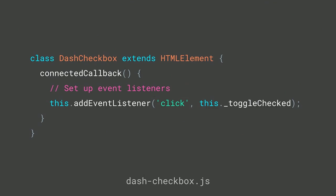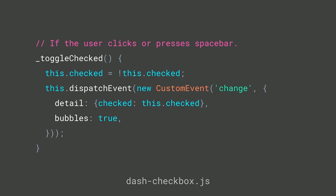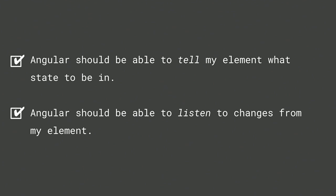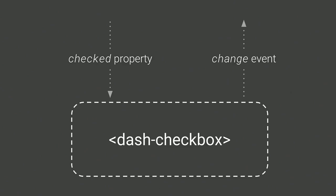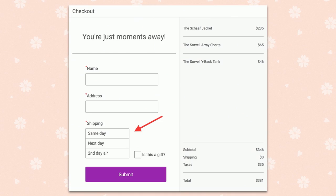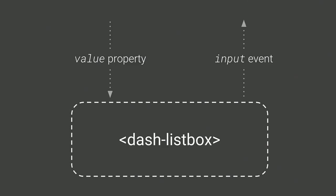Custom elements provide lifecycle callbacks. In connectedCallback — which fires when the element is inserted into the page — I add event listeners for user clicks or key-down events. I have a toggleChecked handler that flips my checked state, triggering the setter to set the attribute, then dispatches an event telling the outside world something changed. The event name 'change' was very specific, because that's what the native input checkbox fires — mapping closely to that interface has upsides when working with Angular. For my list box, I defined a value property interface and fire an 'input' event, making it behave like a generic input control.